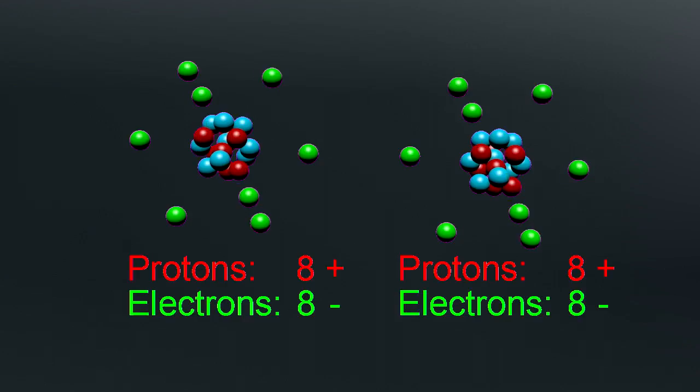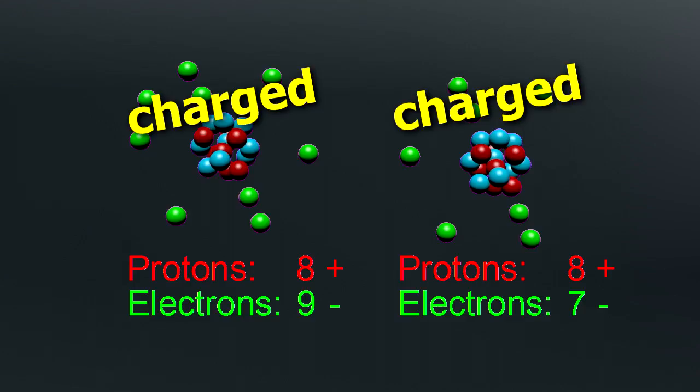If you have the same number of protons as you have electrons, then the number of charges are the same. But if you remove an electron, then the atom has an overall positive charge. Similarly, if we bring in an extra electron, then it has an overall negative charge. In both cases, the number of each type of charge is unbalanced. We say the atom is charged or has an electric charge. And since that atom is charged, we call it an ion.